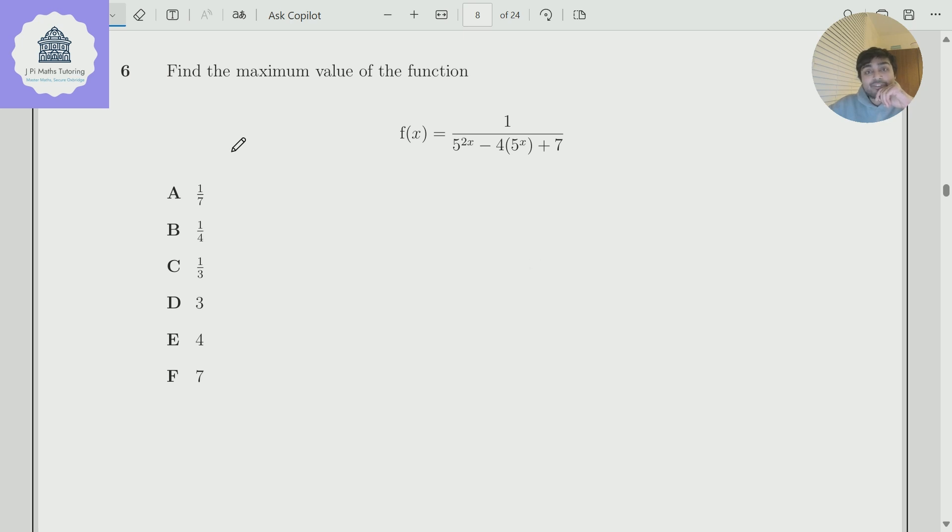Today I've got a problem from the TMUA. We want to find the maximum value of this function f(x), which is 1 over 5 to the 2x minus 4 times 5 to the x plus 7. We've got six options here. We're going to dive right into solving this.